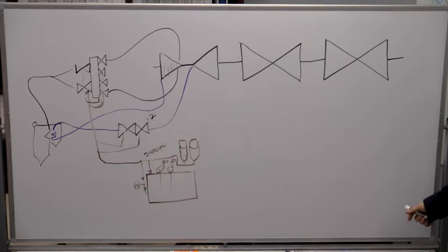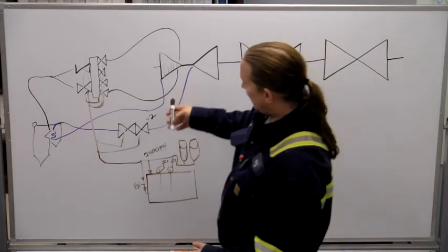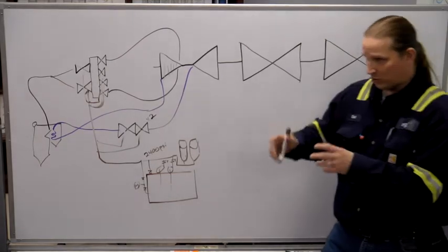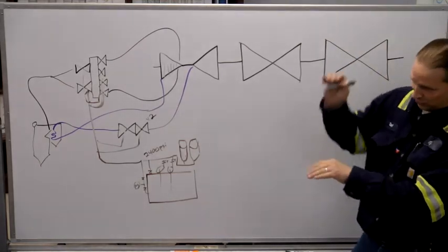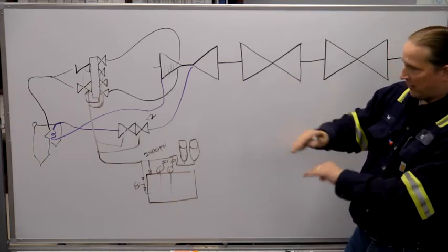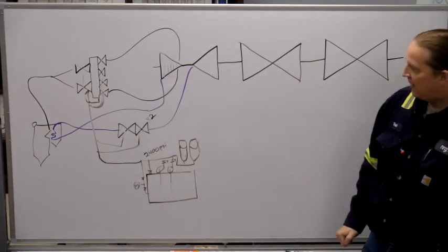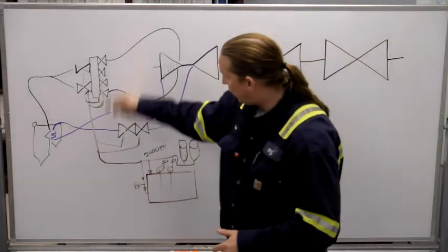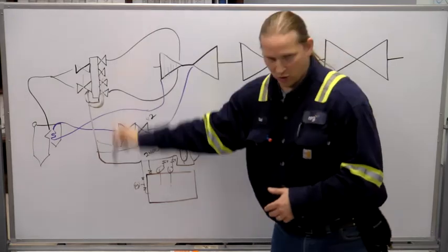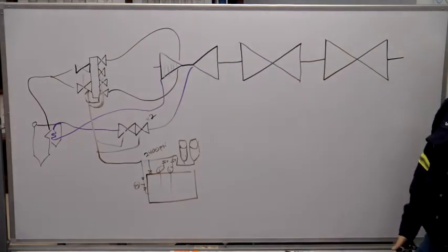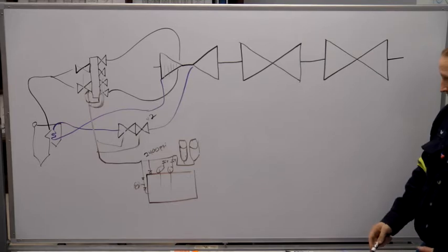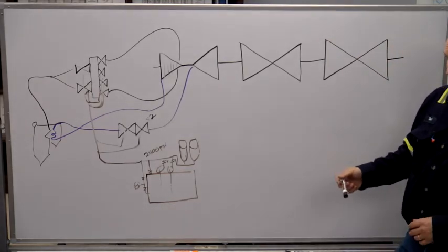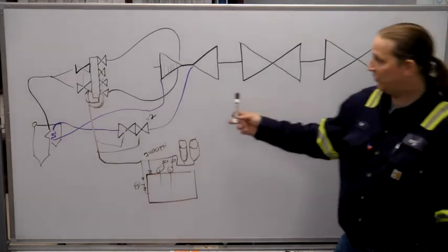If you look at the valves, there is a servo valve which controls how much oil goes on top of the piston and how much oil goes on the bottom — it's actually throttling the pressure to get it where it's supposed to be. And then there are two trip valves, either of which is able to bleed off all the oil and make all of these valves go to the shut position.